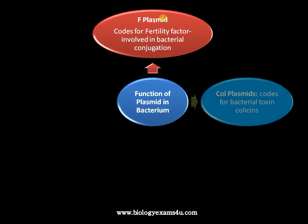The second type is the Col plasmid, and the genes in this plasmid code for a bacterial toxin called colicin.